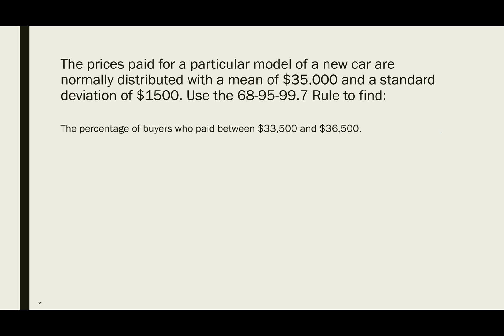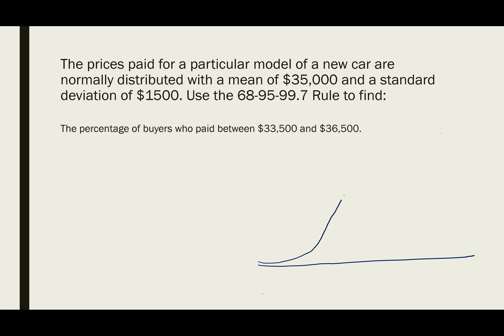In order to do this, we need to go ahead and draw our normal distribution. We're going to sketch a normal distribution and place our mean right in the middle. Our mean in this case is $35,000. With the 68-95-99.7 rule, we're concerned with values that are plus or minus one, two, or three standard deviations from the mean.